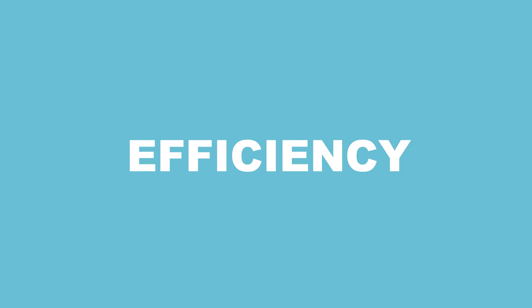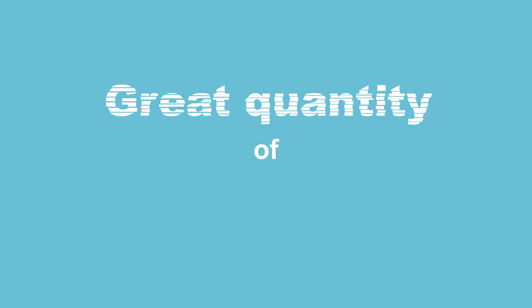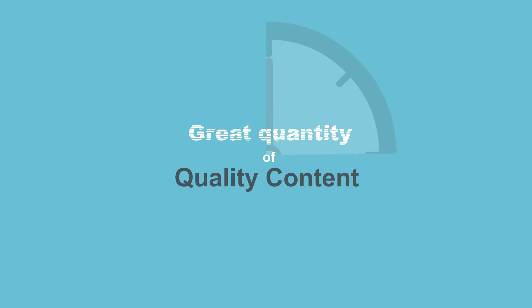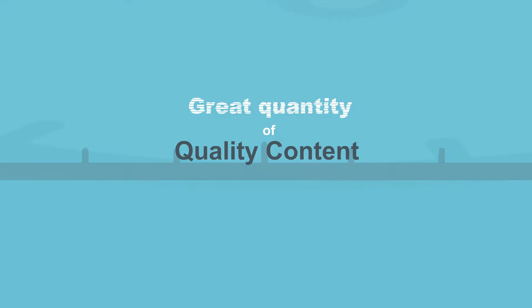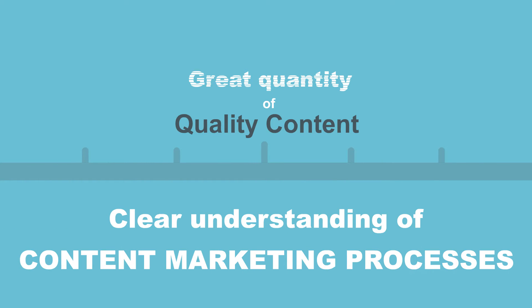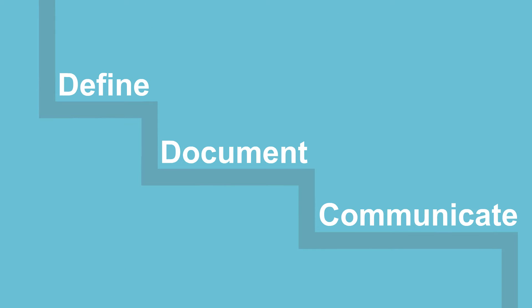Content marketers aim to deliver a great quantity of quality content with minimum churn-out time. This goal can't be reached if your team doesn't have a solid grip on the processes and procedures of the content production cycle. The best way to bring efficiency to your processes is to define, document, and communicate every step in an automated manner.